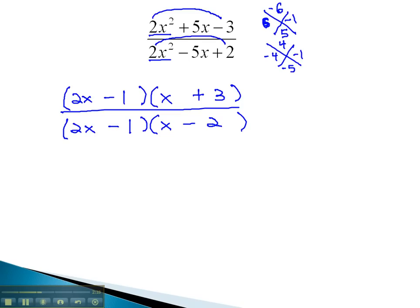Now that we have factored our expression, we are allowed to reduce. Notice we have a common factor in both the numerator and denominator of 2x minus 1. This factor can divide out, leaving us with just x plus 3 over x minus 2 as our reduced rational expression.